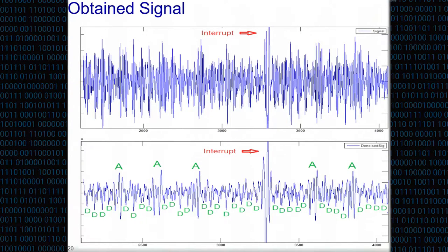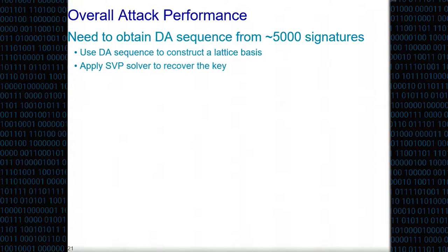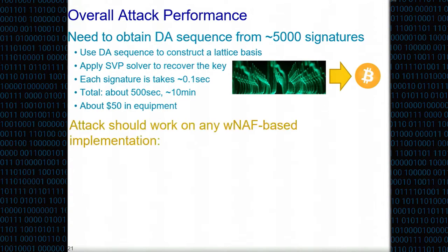This reveals the DA sequence, or almost all of it except the interrupt. After collecting the DA sequence from 5000 signatures, we build the lattice basis, then we apply the SVP solver, shortest vector problem solver, to the lattice. We recover the shortest vector - this problem is hard in theory, often easy in practice, enough for us to do. And we recover the key. In terms of measurement time: every signature takes 0.1 of a second on this phone, overall for 5000 signatures 500 seconds, about 10 minutes of measurement time and about $50 in equipment. Recovers bitcoin keys, for example.